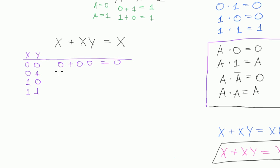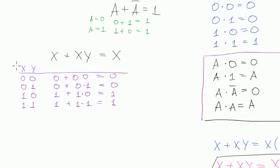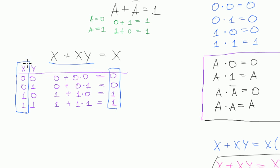Then we flip around: x equals 1 and y equals 0. In that case x plus xy equals 1 plus 1 times 0, and the whole thing equals 1. And the last one is when both variables are 1 — then the expression will be 1 plus 1 multiplied by 1, and the result is 1. You can see we did the same thing as before and we were able to verify our expression: the result is the same as x.